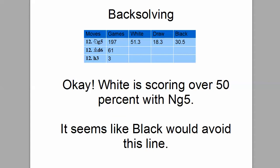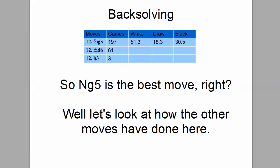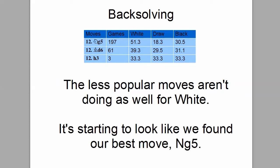White is scoring over 50% with Knight G5. It seems like black would avoid this line. So Knight G5 is the best move, right? Well, let's look at how the other moves have done. The less popular moves aren't doing as well for white. It's starting to look like we found our best move: Knight G5.